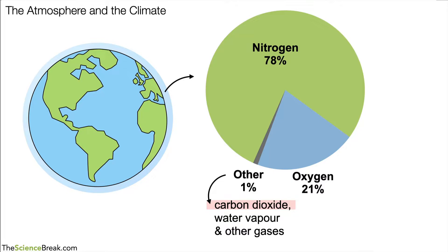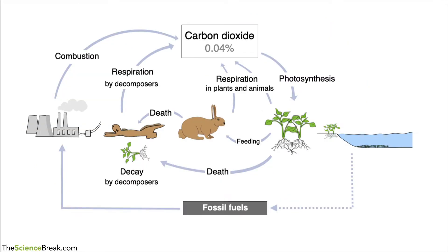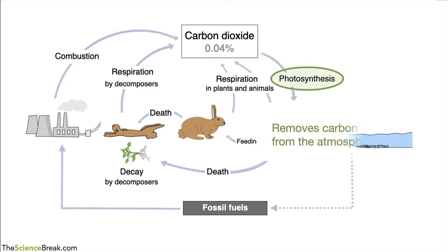We're focusing on the carbon dioxide. You may remember from the last video on the carbon cycle that carbon dioxide is taken out of the atmosphere by plants. The process is photosynthesis, so photosynthesis removes carbon dioxide from the atmosphere.